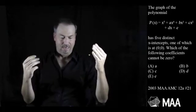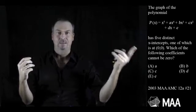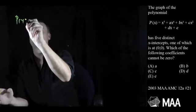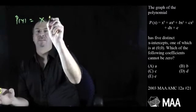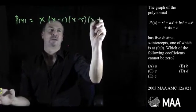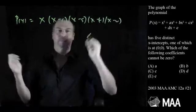So if the five zeros are, say, zero, r, s, t, and u, then I know that p of x must be able to be written in the form x minus zero, x minus r, x minus s, x minus t, and x minus u, something like that.